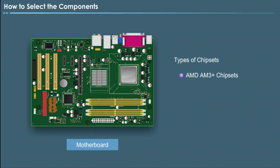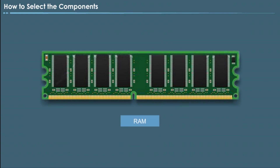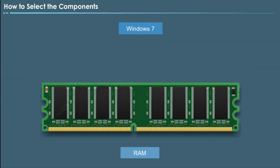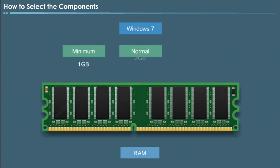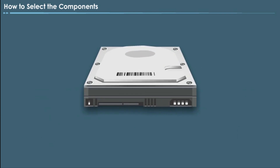The types of chipsets are AMD AM3+ chipsets, AMD FM2+ chipsets, and Intel LGA1150 chipsets. Step 2: Select RAM. This must match your motherboard's clock speed. A Windows 7 system should have at least 1 GB of RAM and 2 GB is normally preferred. 4 to 8 GB is the typical limit of RAM that a motherboard can address.